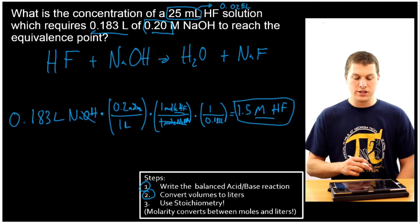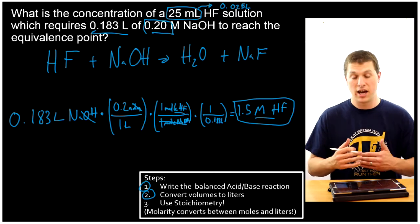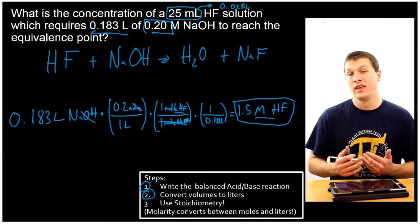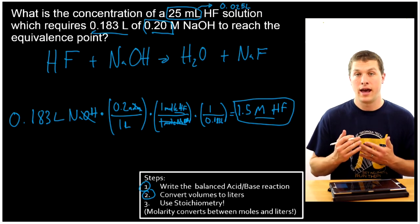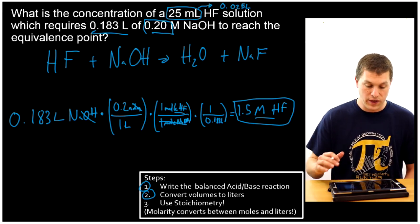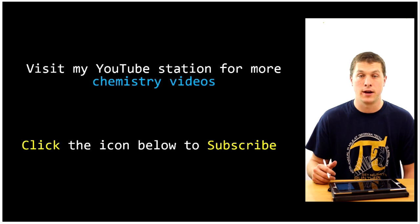So here what we did is we started with the volume and concentration of NaOH we needed to add to titrate HF. And we figured out then the concentration that HF had. So thanks for watching this episode of Real Chemistry on equivalence points and determining our volumes and our concentrations there.